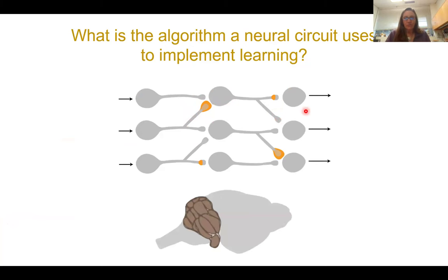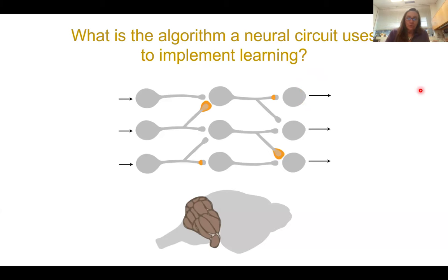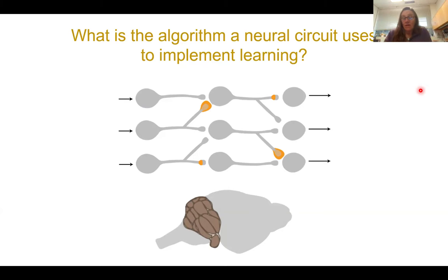My strategy has been to choose a circuit with a relatively simple architecture that makes analysis of this question easier — and of course that is the wonderful cerebellum, which has just five main types of neurons in the cerebellar cortex. As many of you know, there's been a surge of interest in the cerebellum recently, with increasing evidence for a role in functions previously ascribed solely to the forebrain: navigation, attention, planning, fear, and social behavior.